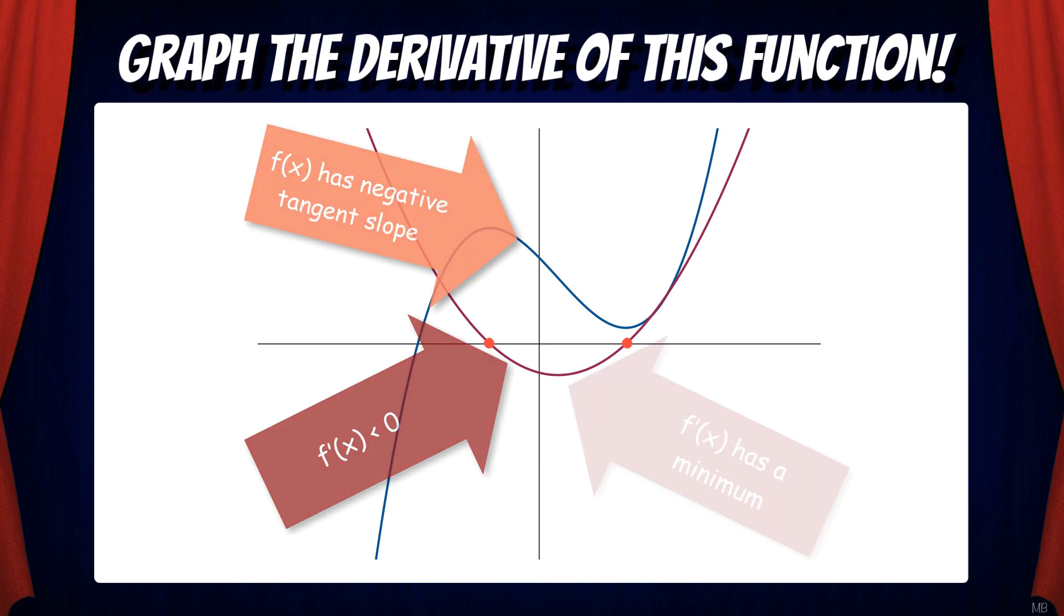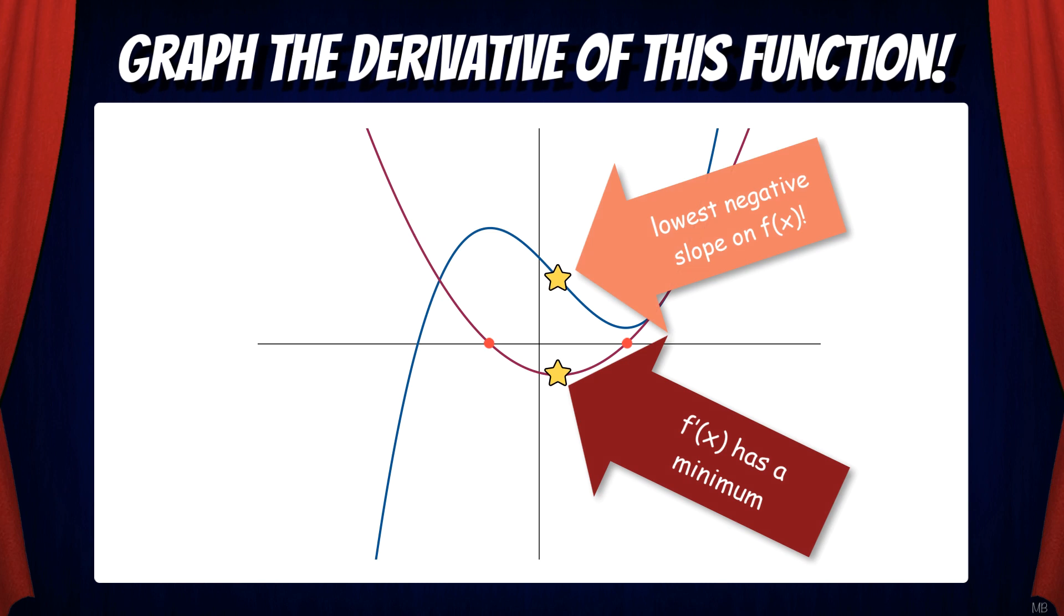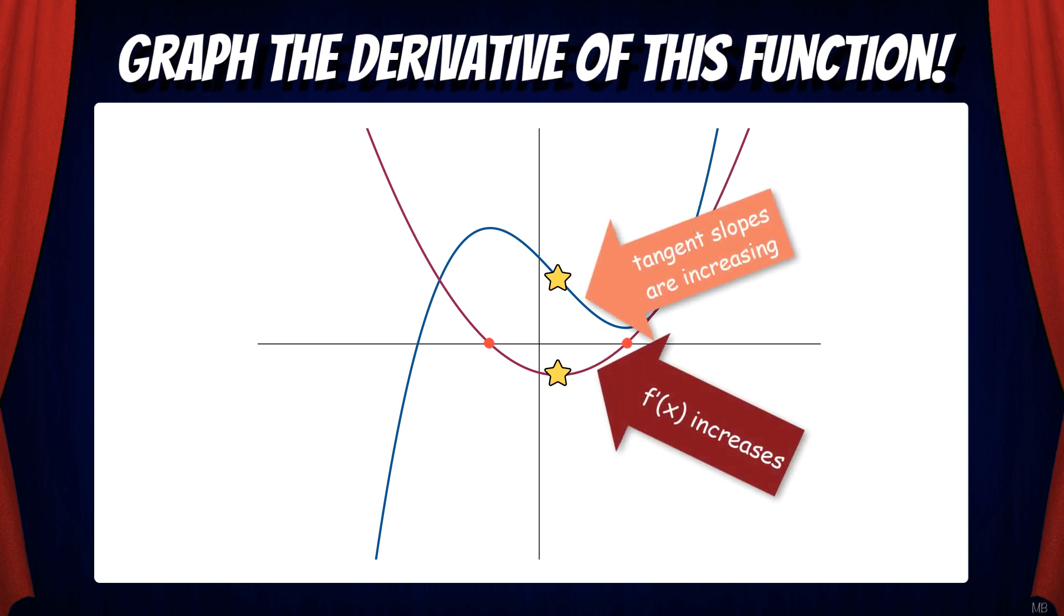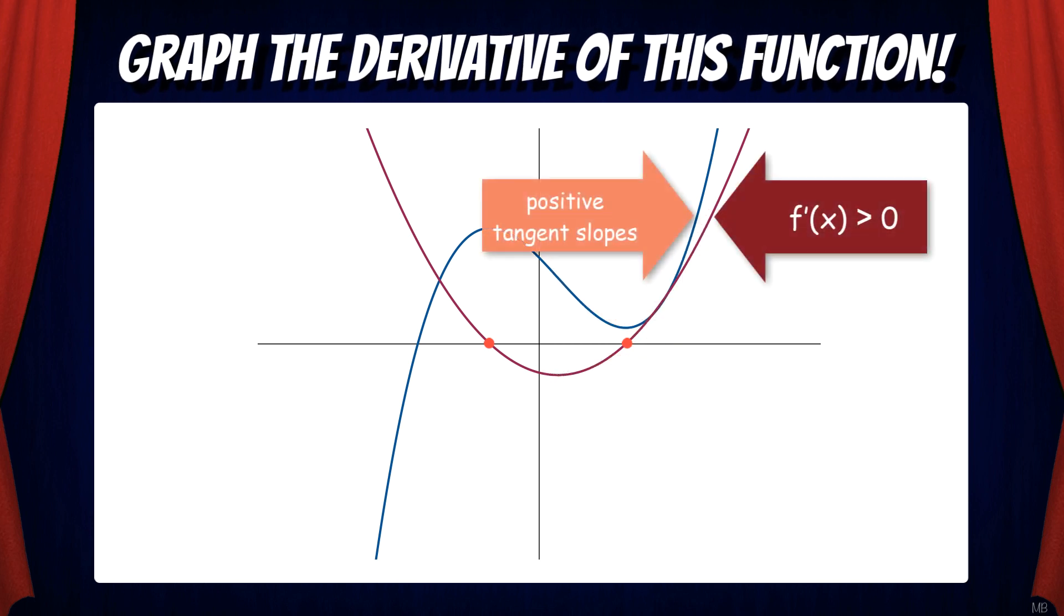Then after passing the local maximum, the slope becomes negative. But there is a point where the slope reaches its least negative value and then increases and approaches zero. After the local minimum on f, the tangent slopes are positive and increasing. That's why the derivative function is greater than zero and increasing.